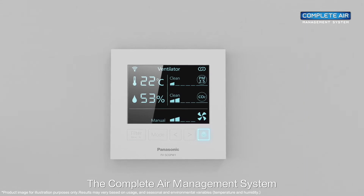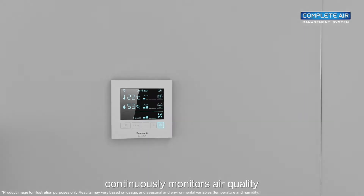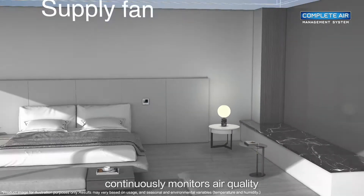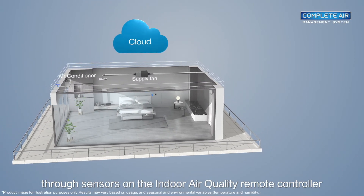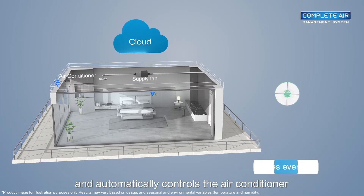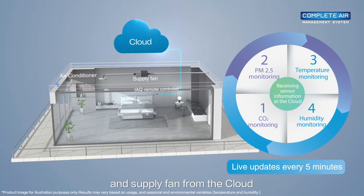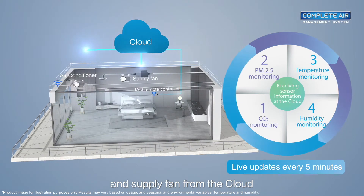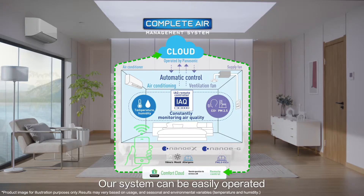The complete air management system continuously monitors air quality through sensors on the indoor air quality remote controller and automatically controls the air conditioner and supply fan from the cloud. Our system can be easily operated through an app on your smartphone.